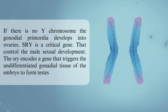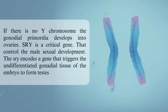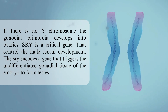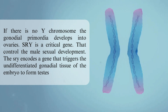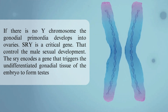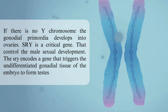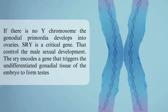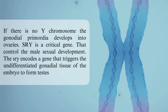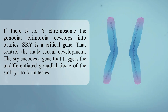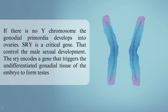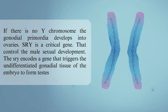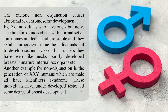If there is no Y chromosome, the gonadal primordia develops into ovaries. SRY is a critical gene that controls male sexual development. The SRY encodes a gene that triggers the undifferentiated gonadal tissue of the embryo to form testes.